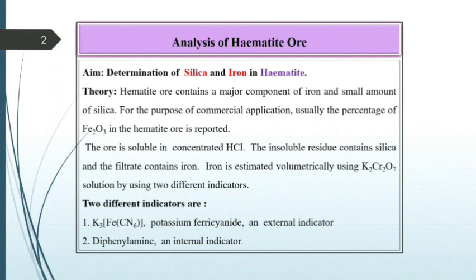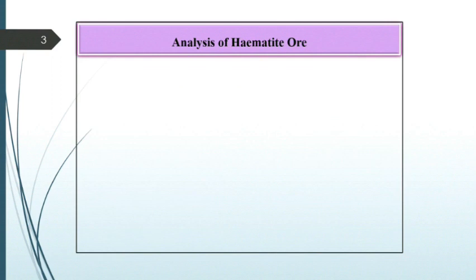Iron is estimated volumetrically using K2Cr2O7 solution by using two different indicators. The two different indicators are K3Fe(CN)6, potassium ferricyanide as an external indicator, and diphenylamine as an internal indicator.